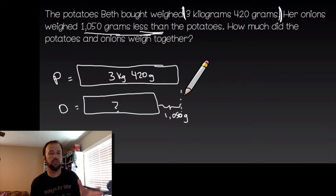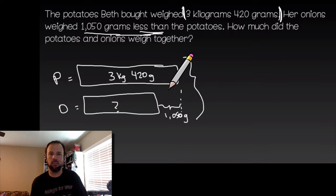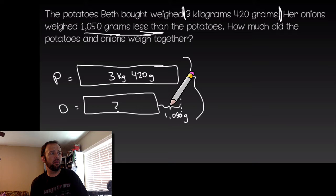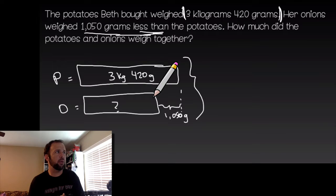Right — subtraction. We're gonna have to subtract first to figure out what the onions weigh, because ultimately we want to know what these two weigh together. If I just added that 1050 grams onto what I already have, it's not really gonna tell me much. Since we don't know what the onions weigh, we subtract that 1050 grams from the potatoes, and then we can add the onions and the potatoes together to get our total.